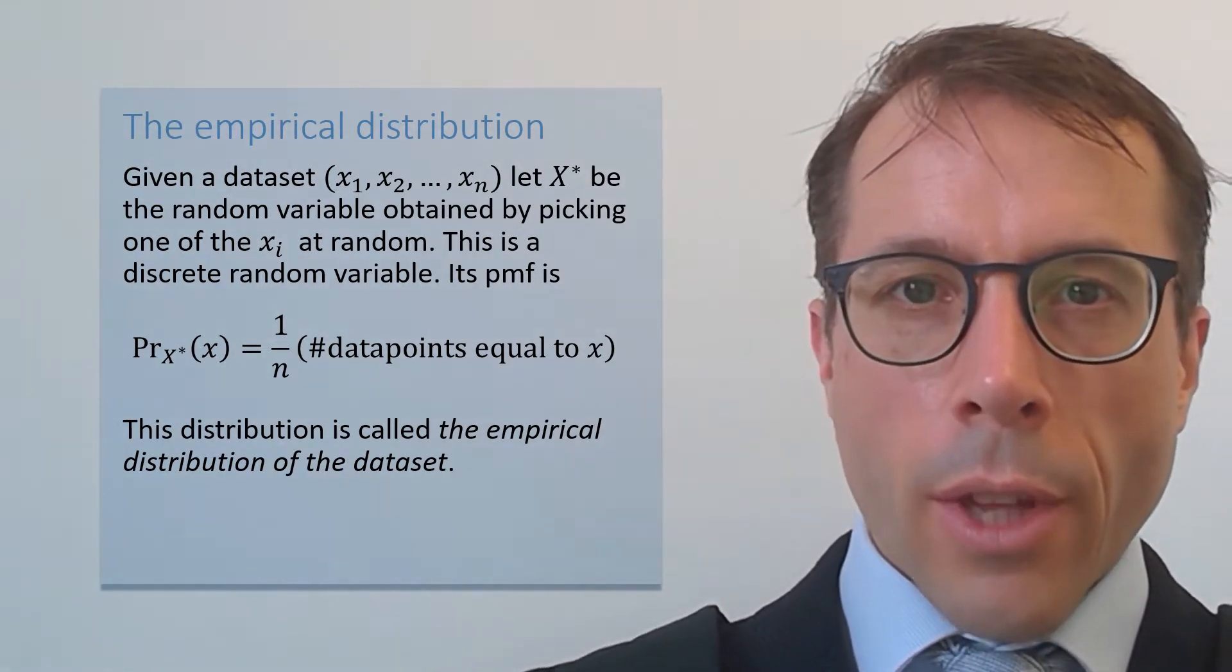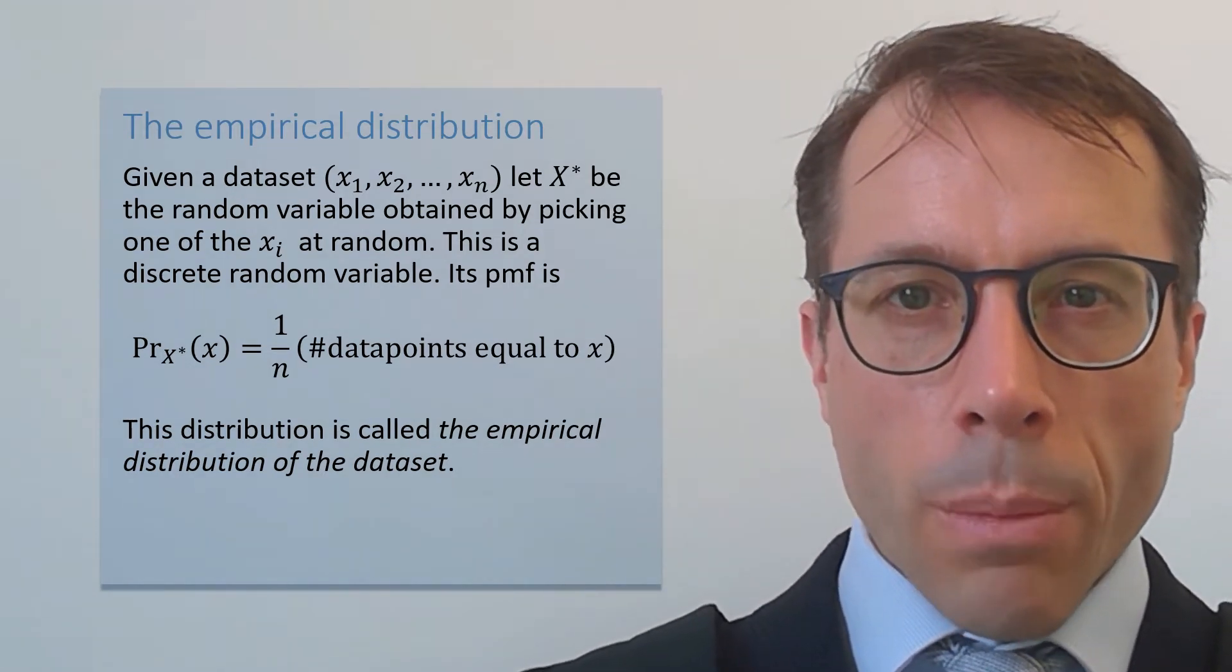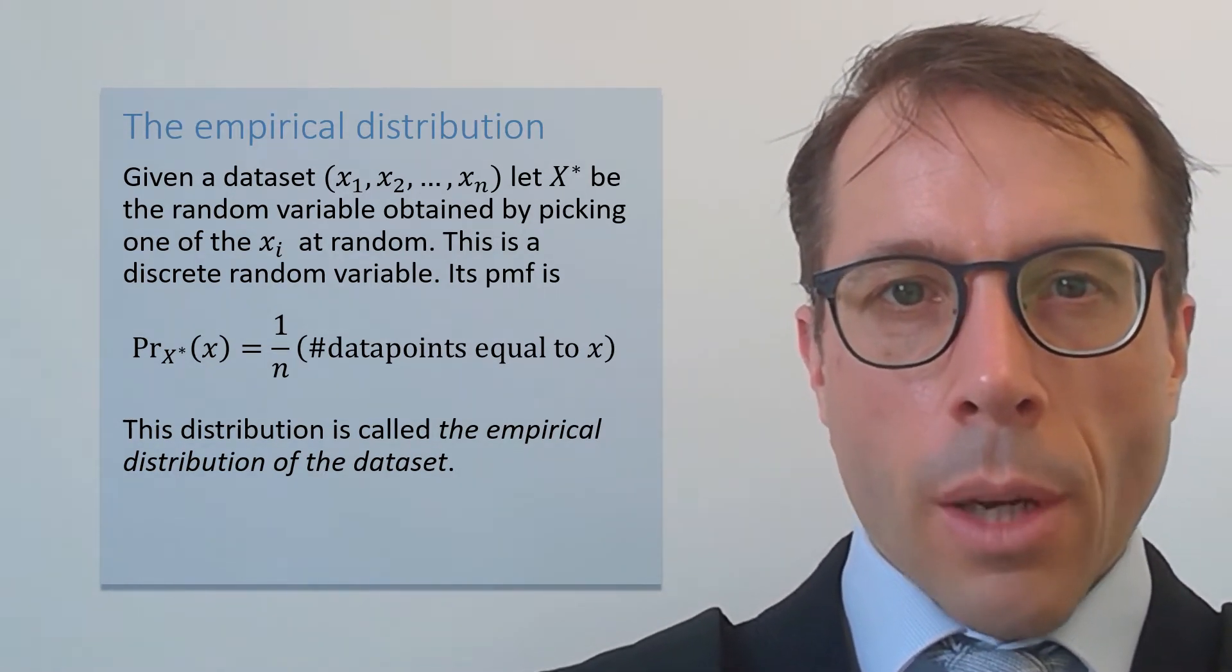If there are no duplicates, then every value has probability 1 on n. If there are duplicates, then the probability is multiplied up appropriately.